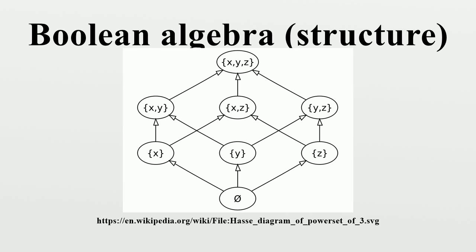An ideal of the Boolean algebra A is a subset I such that for all x, y in I we have x ∨ y in I and for all a in A we have a ∧ x in I.